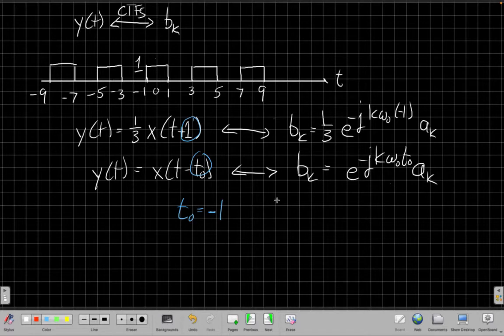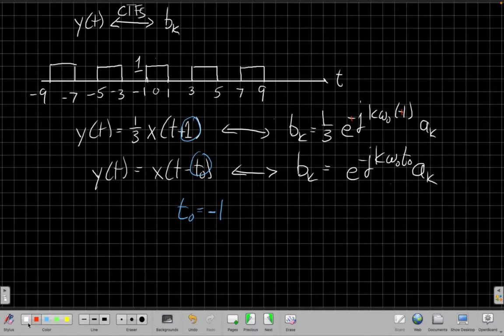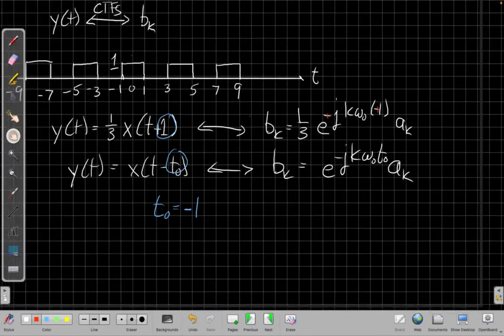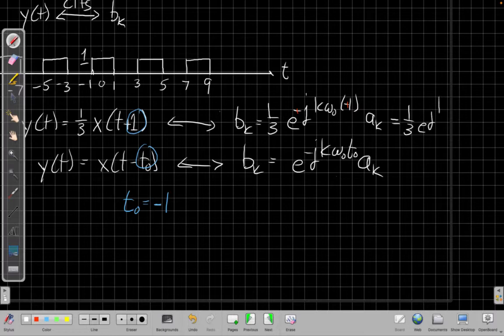And this becomes e to the minus j k omega 0, and then this is a minus 1 for t0 a sub k. And if I want, I can say, well, based on that, I'm going to have these two minus signs cancel out and I get a plus 1.